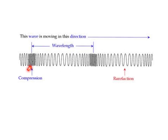Our second type of wave, represented by this diagram, is called a longitudinal wave. Longitudinal waves are very different from transverse waves in that we don't have the usual up and down features. Instead we have one long wave that has compressions and rarefactions. Compression is when the particles the wave is causing to move come close together. Rarefaction is where they expand — so compression is where particles are close together, and a rarefaction is where the particles are moving apart.